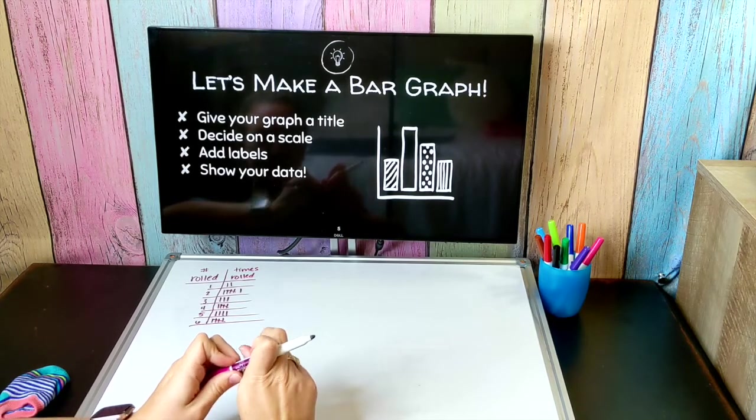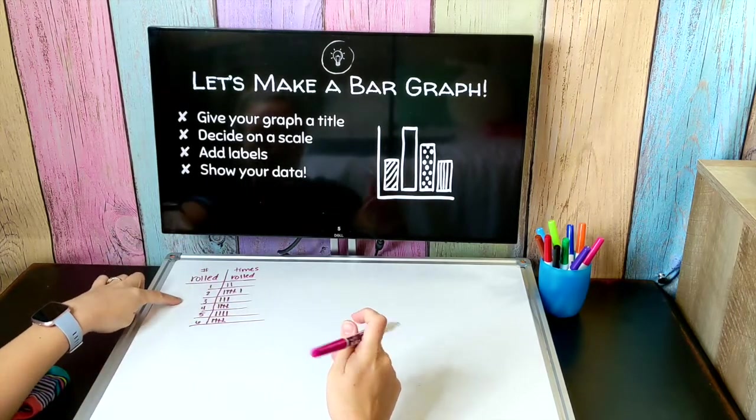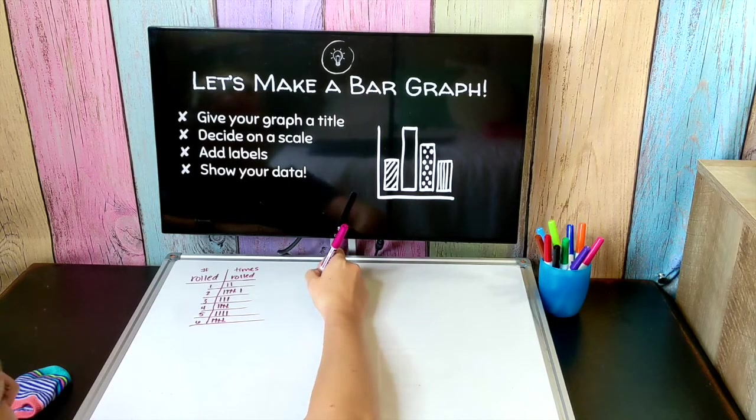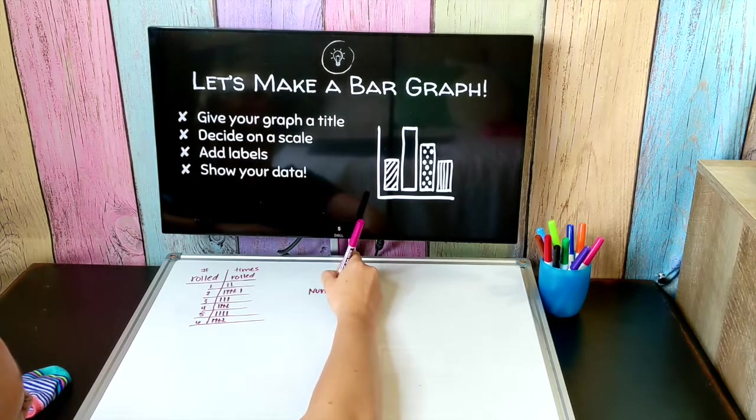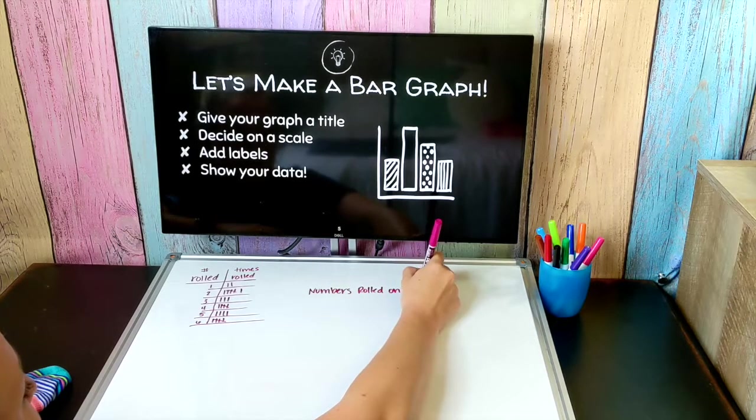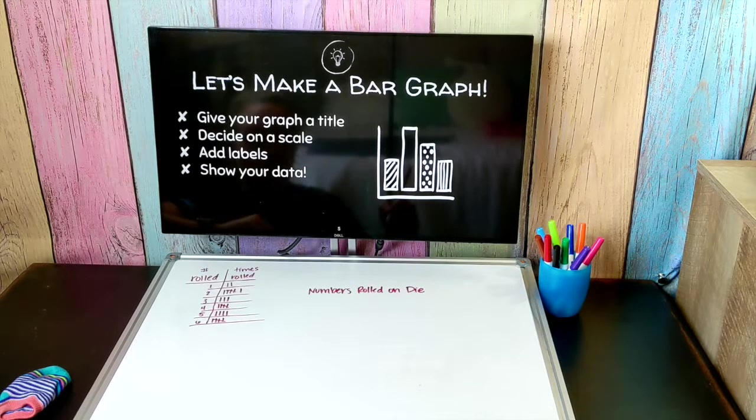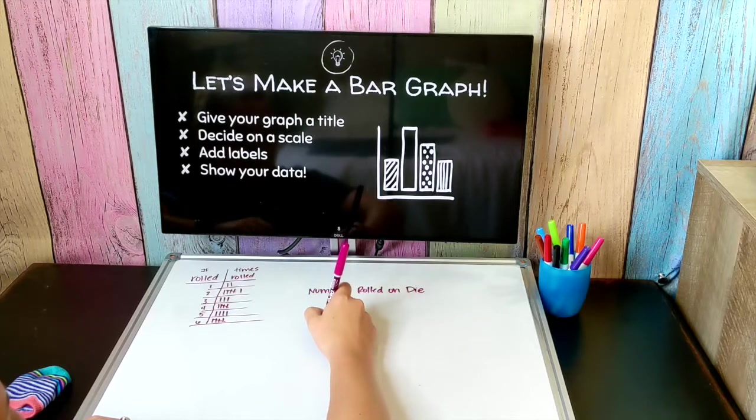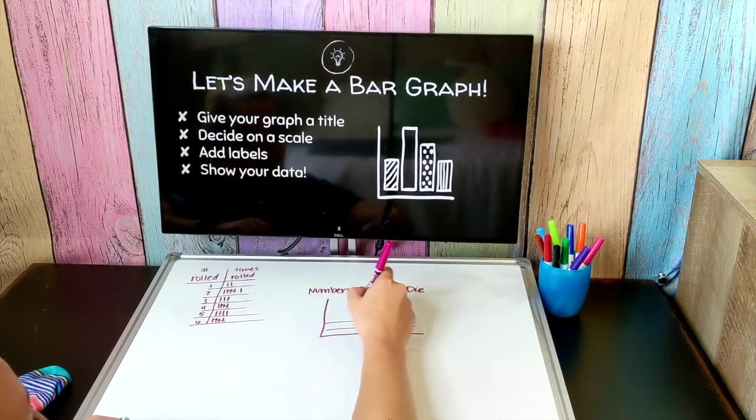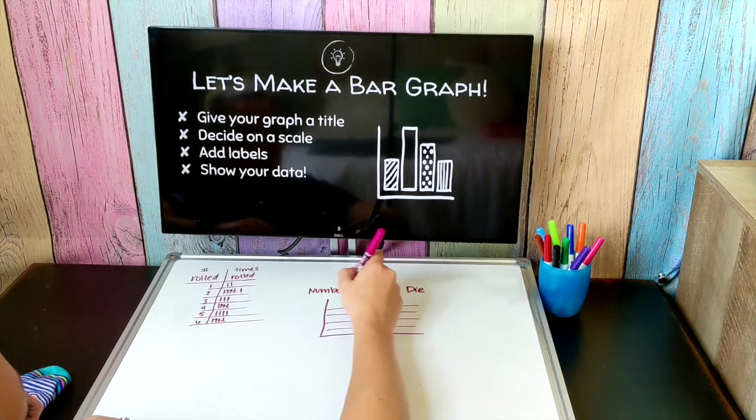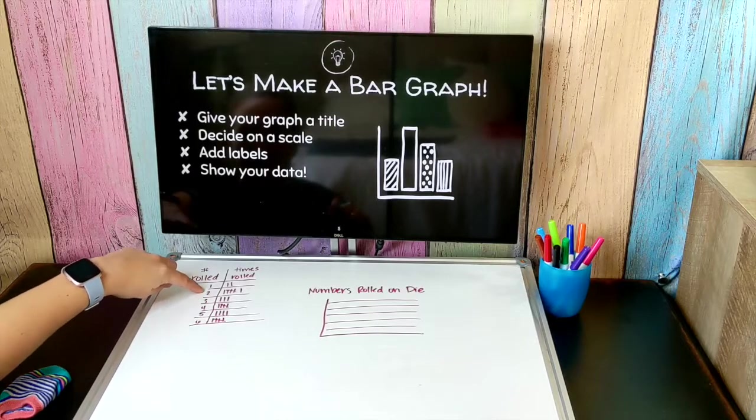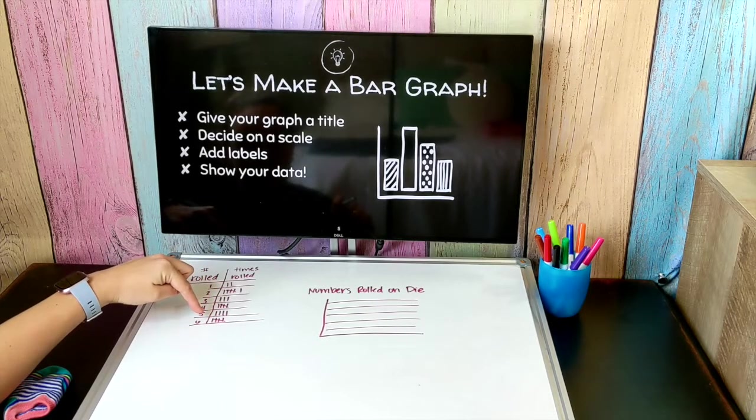One of the first things we need to do is to give our graph a title. In this case we are rolling dice so we can name our graph numbers rolled on a die. The next thing we need to do is prepare to make our bar graphs. We need to decide on what kind of scale we're going to use. If you have lined paper it's going to be a lot neater than probably mine looks.